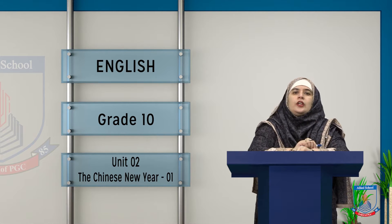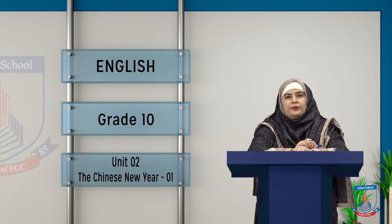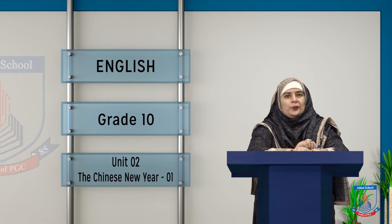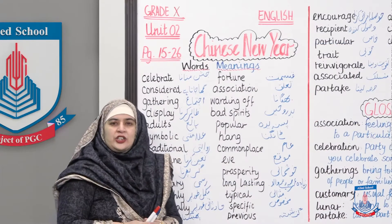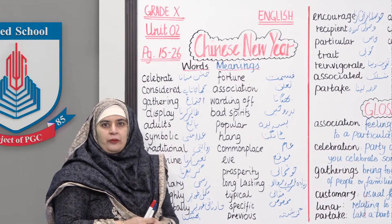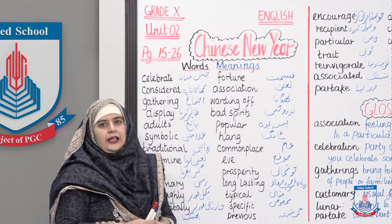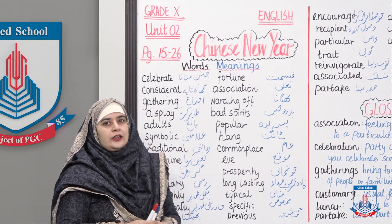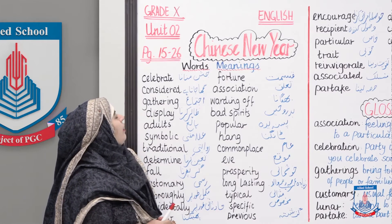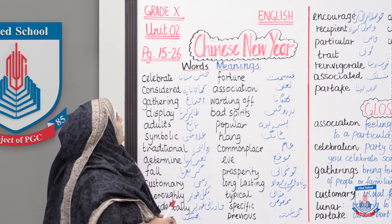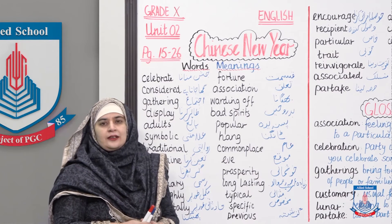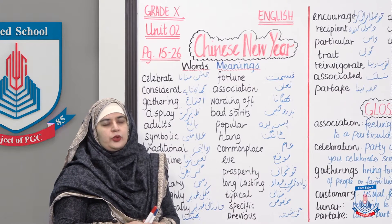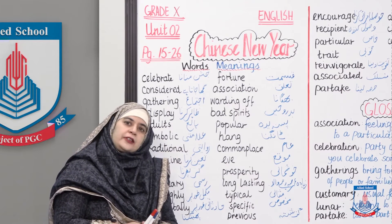Let's start today's lesson without much ado. Grade 10, what does the board say? The board says that today you will do your English textbook Unit Number 2, that is the Chinese New Year. Page number is 15 to 26. So start your Unit Number 2, the Chinese New Year.